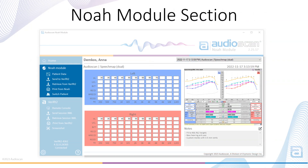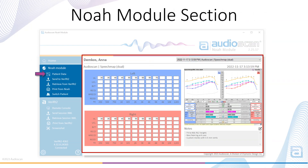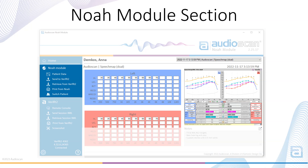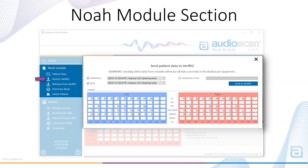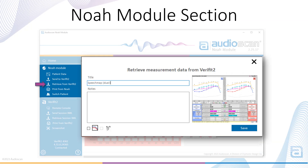The NOAA module section is where you can view and select patient data. Select Send to Verifit 2 to send data to your AudioScan equipment from the AudioScan NOAA module. This can be audiogram data, RECD data, as well as previous measurement results as comparison curves. Note that the AudioScan equipment name will appear in this menu and subsequent menus, according to the equipment you're connected to.